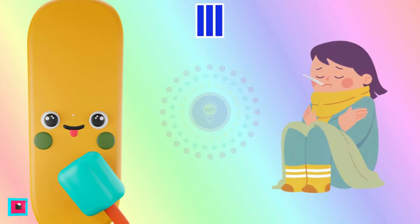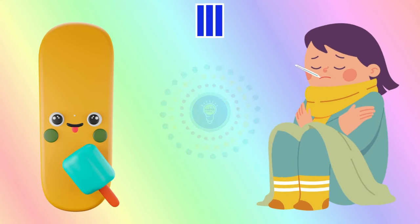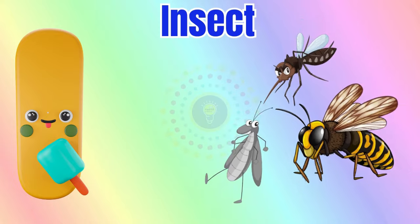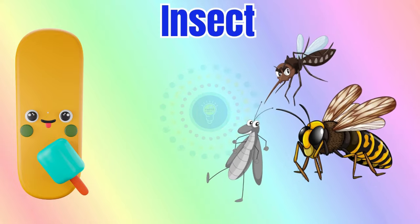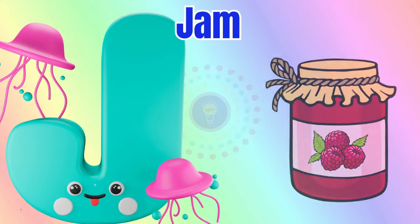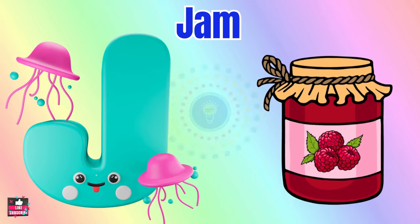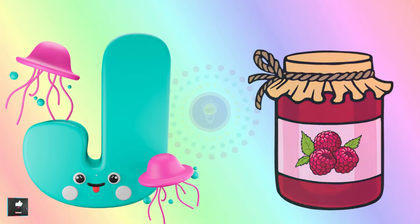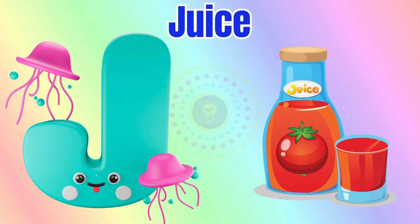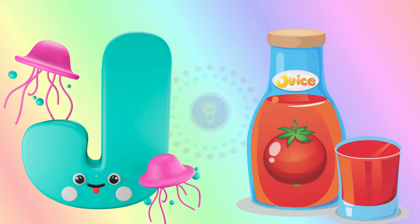I is for ill, i-i-ill. I is for insect, i-i-insect. J is for jam, j-j-jam. J is for juice, j-j-juice.